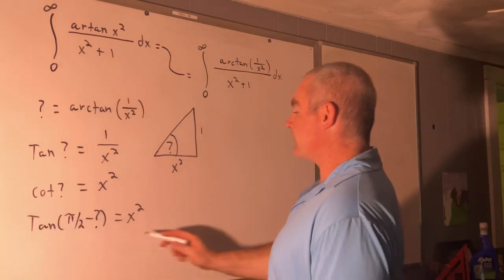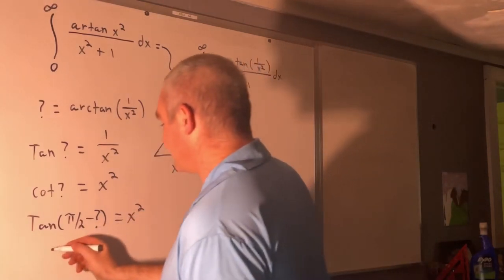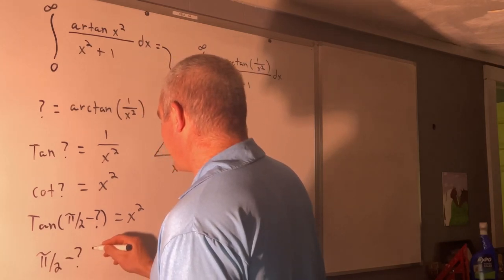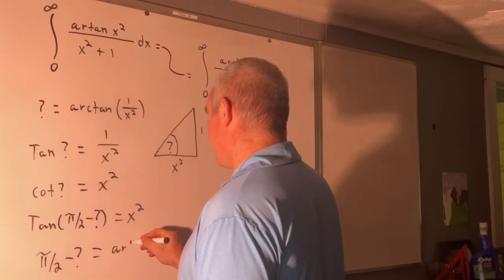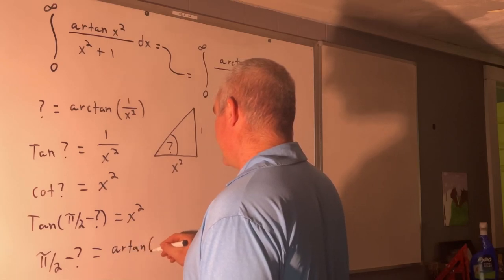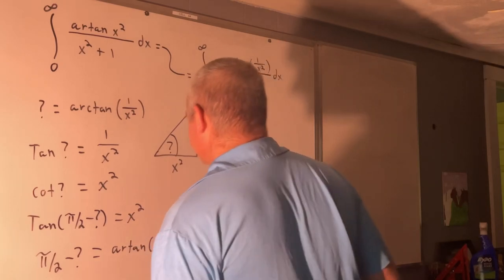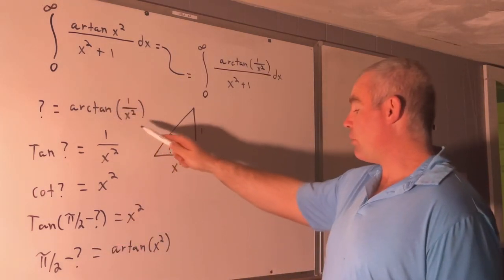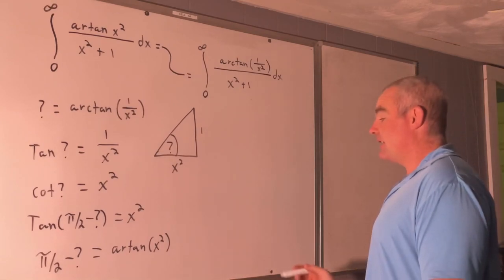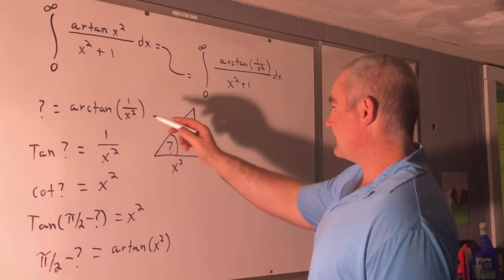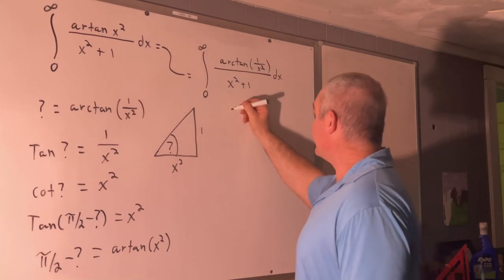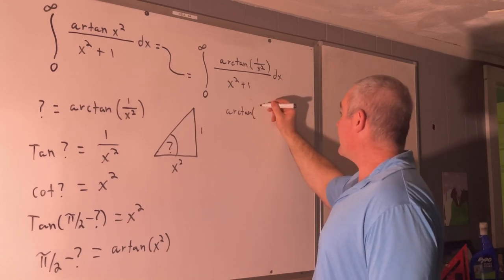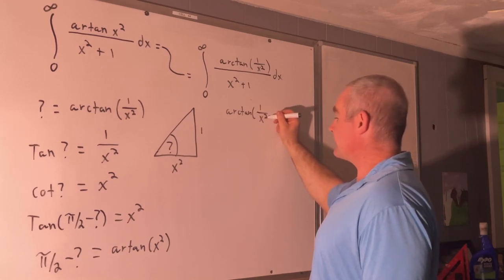Okay, so now we'll take the inverse tangent on both sides. So that's going to give us pi over 2 minus question mark is equal to arc tangent of x squared.